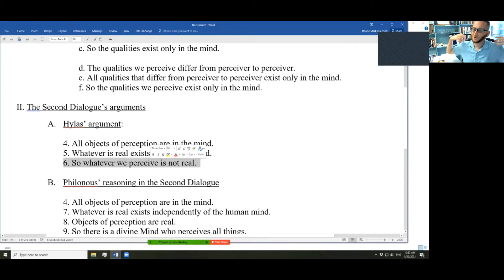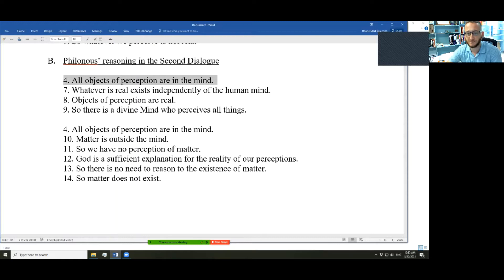But Philonous enlightens him and does a better job. All objects of perception are in the mind, he argues, and therefore, since whatever is real exists independently of the human mind, and since what we perceive actually is real, this is not required as a conclusion. This may be used as a premise. Objects of perception are real. Despite the fact that Berkeley is the guy who denies that matter exists, he considers himself a very common sense person. He's trying to preserve common sense. Objects of perception are real. What we perceive is real. The teacup is real. I perceive the teacup. It's real. That's good enough. He is an empiricist who takes our experience and our perception very seriously.